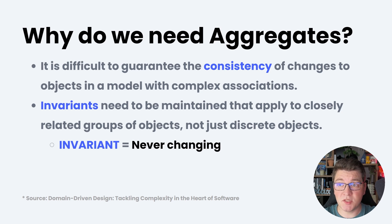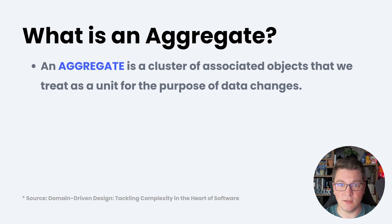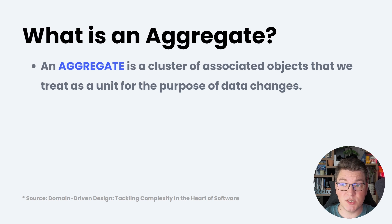Now let's talk about what an aggregate actually is. From the book Domain-Driven Design: Tackling Complexity in the Heart of Software, an aggregate is a cluster of associated objects that we treat as a single unit for the purpose of data changes. In other words, we treat the aggregate as a transactional boundary inside our domain, and everything inside of the aggregate should remain consistent when we make data changes.